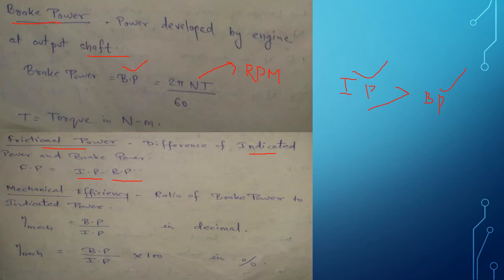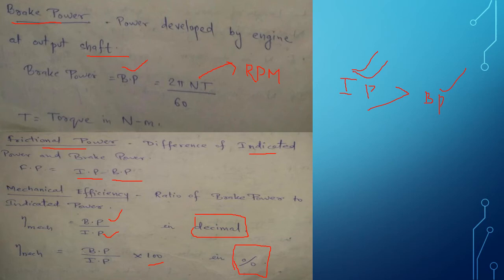Mechanical efficiency is defined as the ratio of brake power to indicated power — that is, the power developed at the output shaft divided by the power developed by the fuel combustion. Mechanical efficiency = Brake Power / Indicated Power. This gives a decimal value; multiplying by 100 gives the percentage. This is the mechanical efficiency of the IC engine.